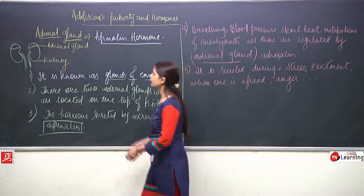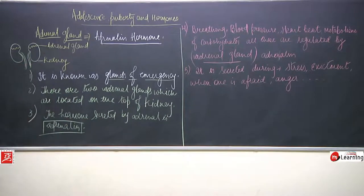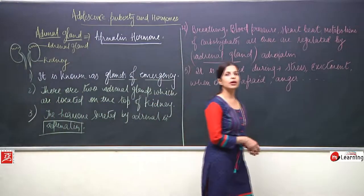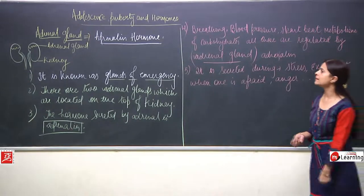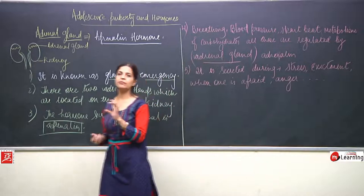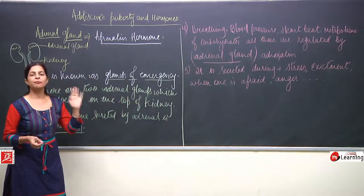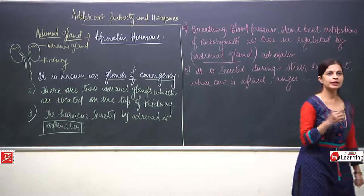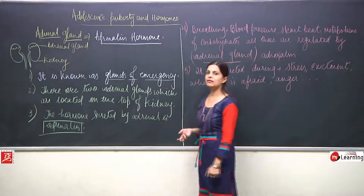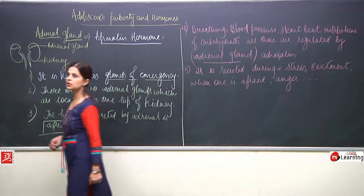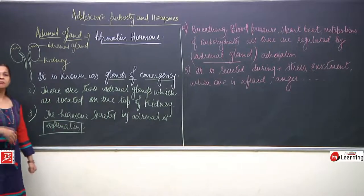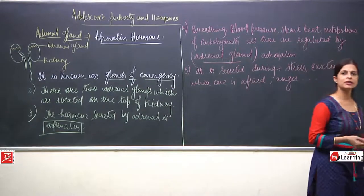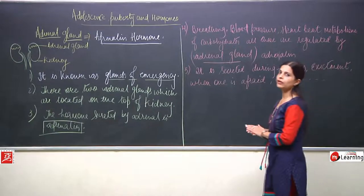Now we will talk about the last two endocrine glands — ovaries and testes. Till now we have discussed most of the glands: pineal, hypothalamus, pituitary, thyroid, parathyroid, thymus, pancreas, and adrenal gland. Now we will be discussing the ovaries and the testes.